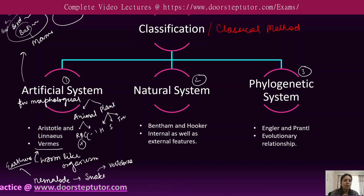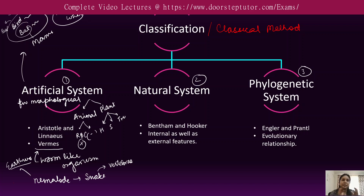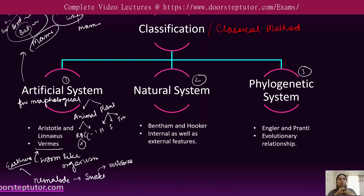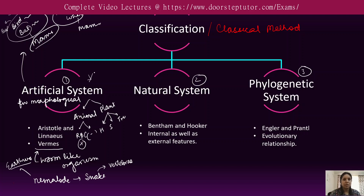Similarly, in water bodies, both fish and whales are present. The artificial system classified whales as fish. But we know that whale is a mammal, just as bat is a mammal. So the artificial system separated closely related species — this is a major drawback of the artificial system.